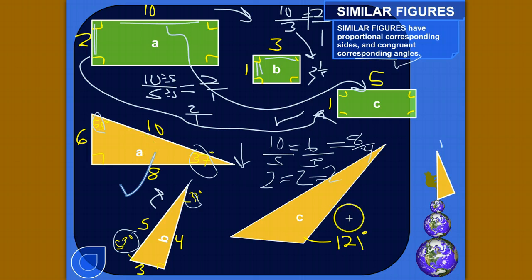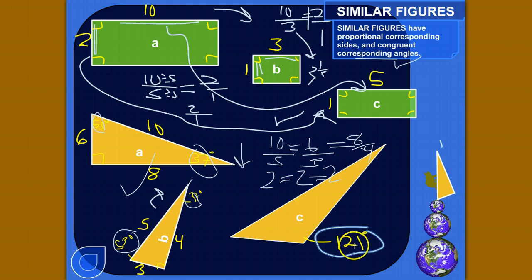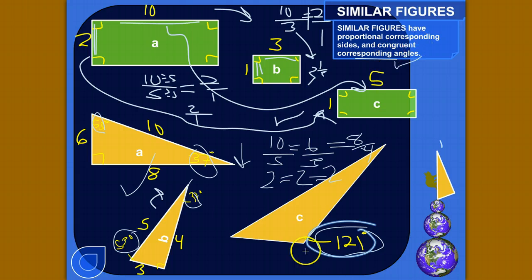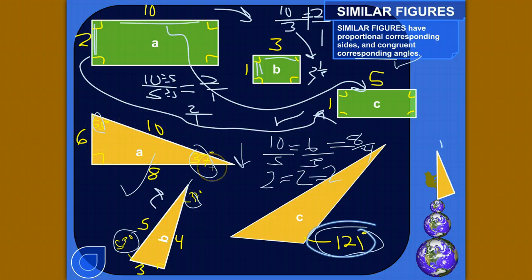What about — would triangle A be similar to triangle C? I haven't written down any side lengths for triangle C, but that doesn't even matter because this angle on triangle C is 121 degrees. Do I have any angles over here that are 121 degrees? No. None of the angles would be congruent with this one. So we can eliminate it as a possible similar figure right away, because all the corresponding angles have to be congruent and all the sides have to be proportional. If one angle doesn't correspond to anything, it's not similar.